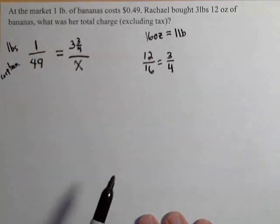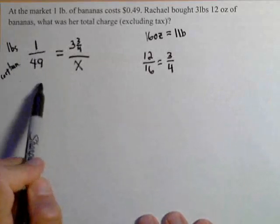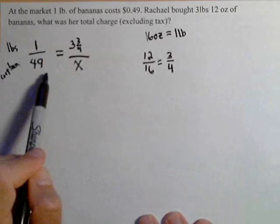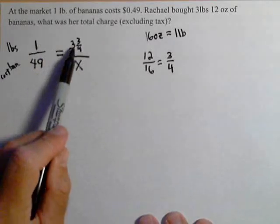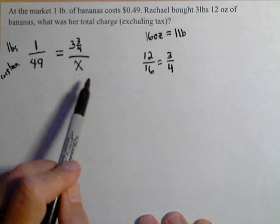Here's our proportion. We've got to make sure that we're either lined up horizontally or vertically. We could have done x over 49 equals 3 and 3 fourths over 1. That would have worked as well.